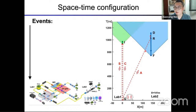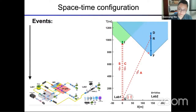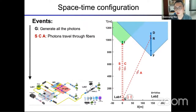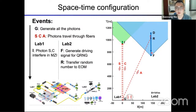We must ensure that event I (the interference event) and event F (the choice event) are outside each other's light cones — meaning event I is outside the future light cone of event F. From special relativity's perspective, event F cannot influence event I with a signal traveling at or below the speed of light. This ensures Einstein's locality condition. Events G are the generation events where all three photons are created; photon A travels to Lab 2 where several events related to random choice and polarization projection occur.